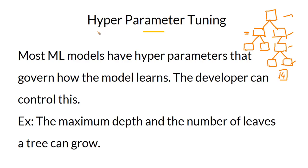This process of tuning the hyperparameters to maximize performance is called hyperparameter tuning. The developer building the algorithm has control over this. An example of hyperparameters for decision trees: the maximum depth and the number of leaves are some common hyperparameters for decision trees.